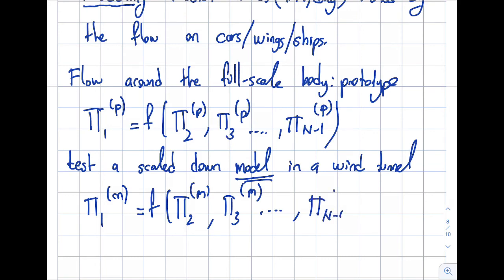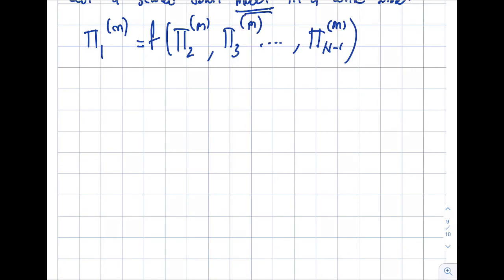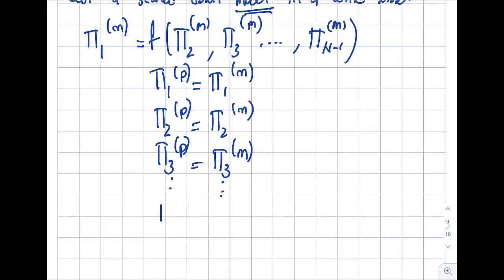It will look very similar to the prototype. Pi 1 of the model, pi 2 of the model, pi 3 of the model, all the way to pi n minus 1 of the model as well. And now here's how I'm going to relate the prototype and model properties. I will equate the corresponding pi terms to each other. So here's what I'm going to do. I'm going to say that pi 1 of the prototype will be equal to pi 1 of the model. Pi 2 of the prototype is pi 2 of the model. And let's do the pi 3 as well. Pi 3 of the prototype is equal to pi 3 of the model. And it goes all the way to pi n minus 1 of the prototype will be equal to pi n minus 1 of the model.